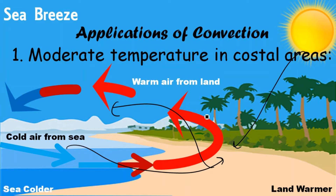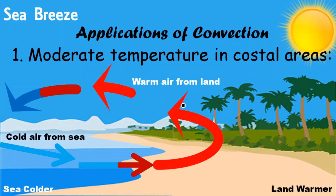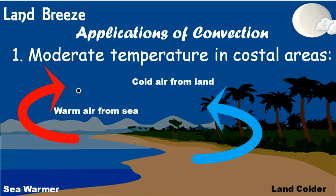Like this, a convection current sets up in the coastal area. Whenever this convection current is set up, a cool breeze is always moving around, maintaining moderate temperature. The process during the day — where the sun heats land particles, they move upward toward the sea, and cold sea particles come toward the land — is known as sea breeze.